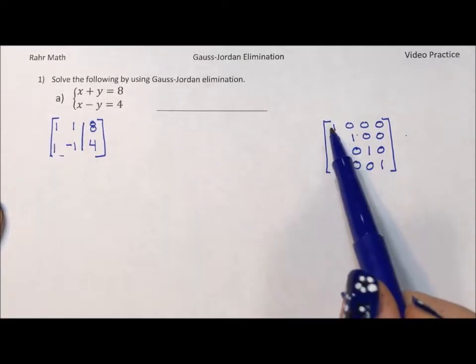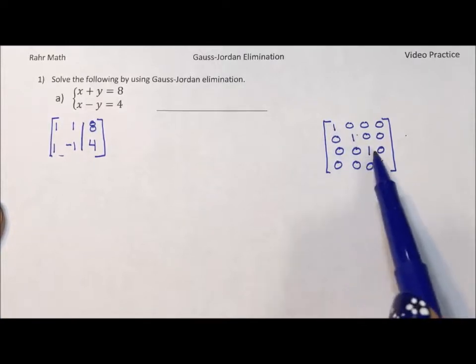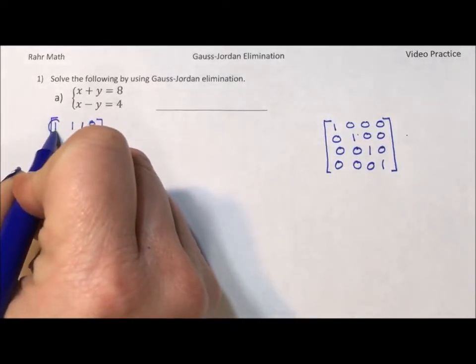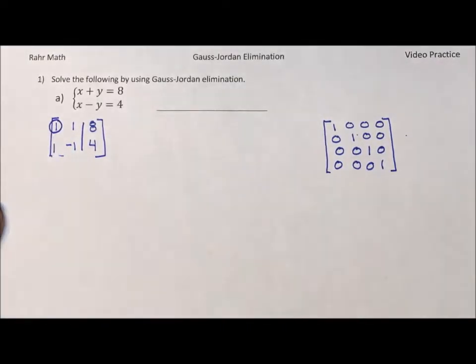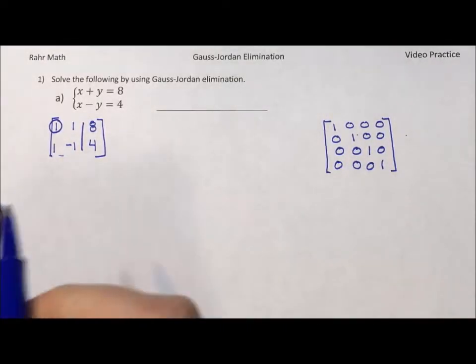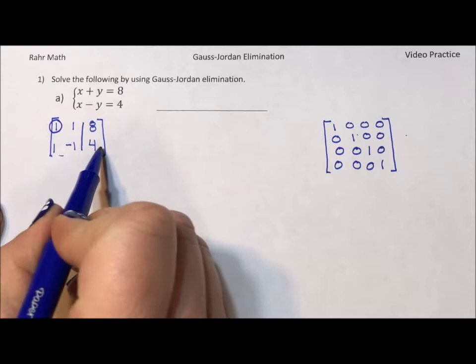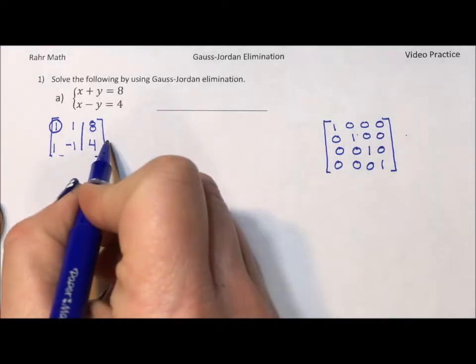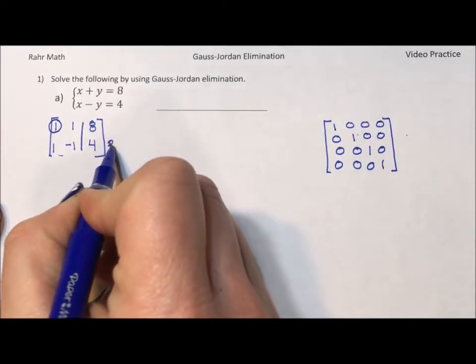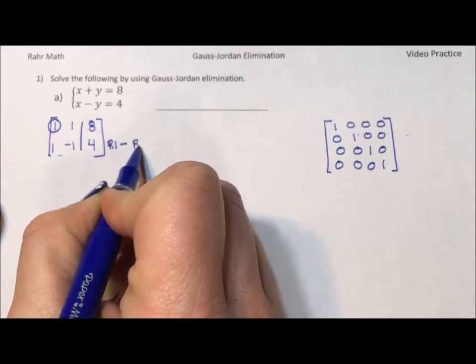So I'm going to basically build it out by pivoting on each of the ones that I want. So I'm going to pivot on this one. I'm going to use this one to eliminate that one. So what I'm going to do is I'm going to replace row two with row one minus row two.